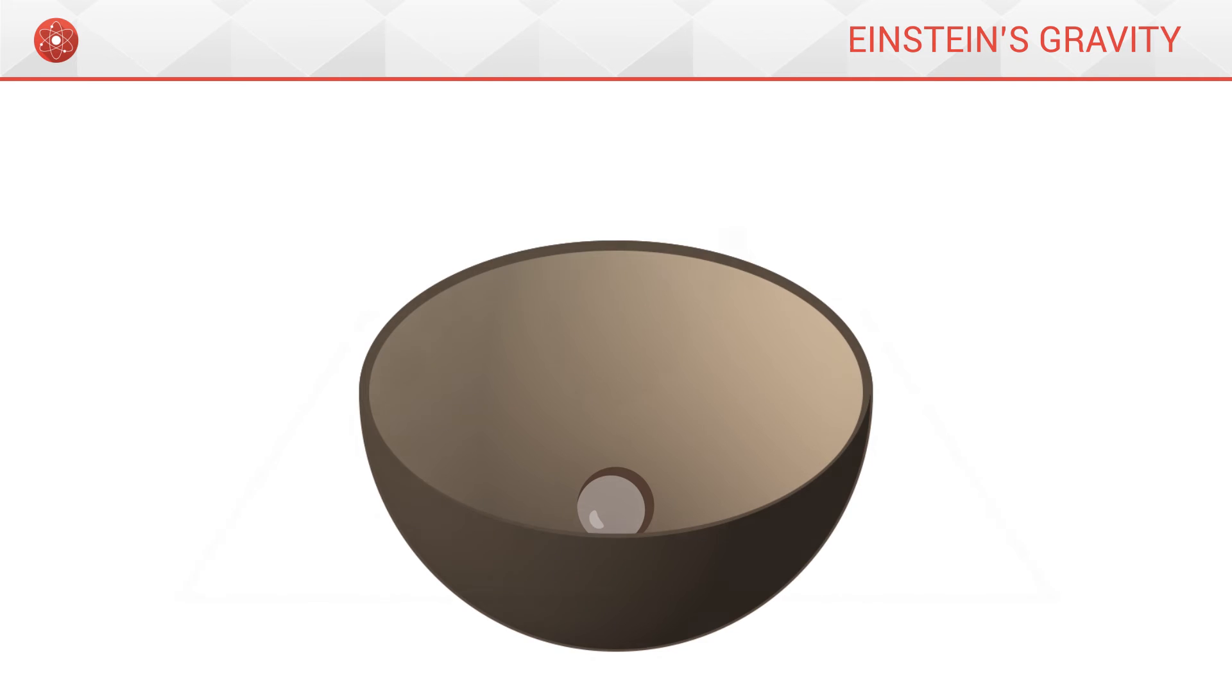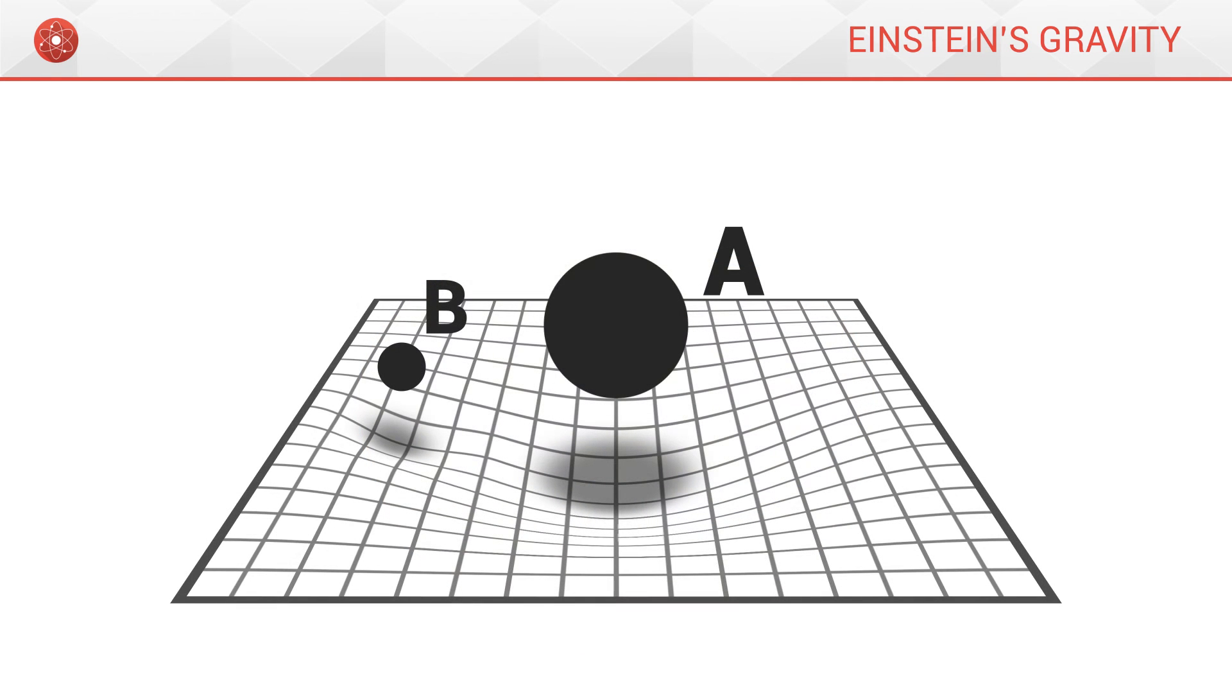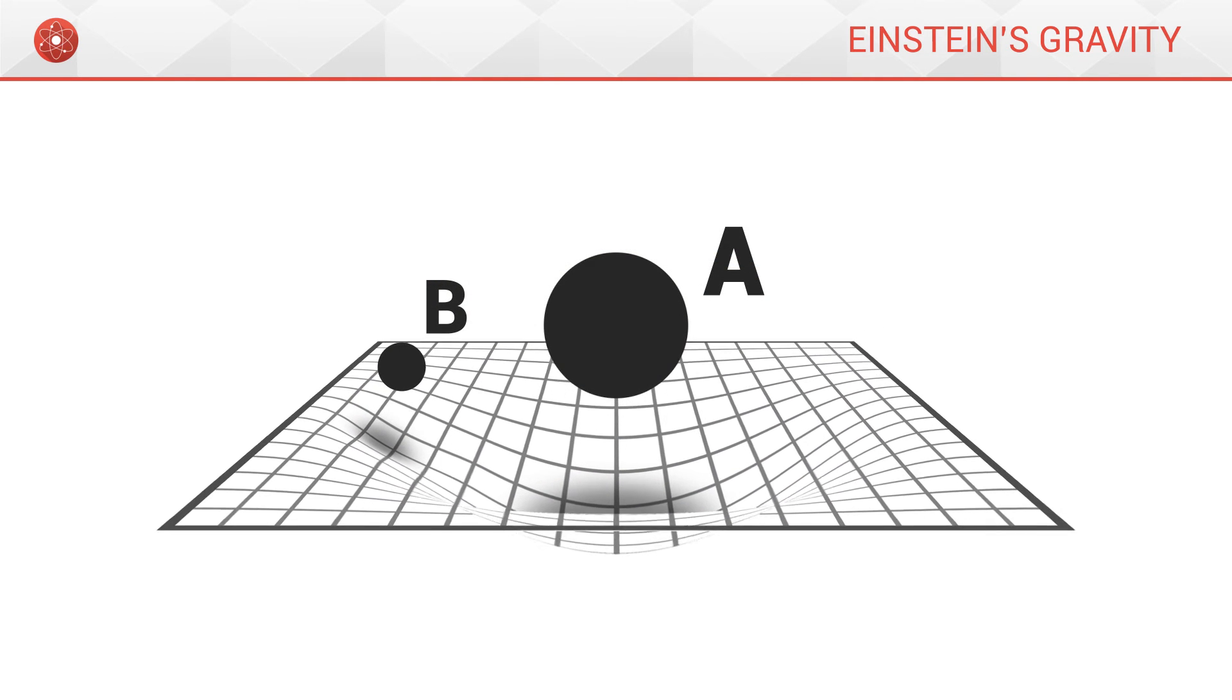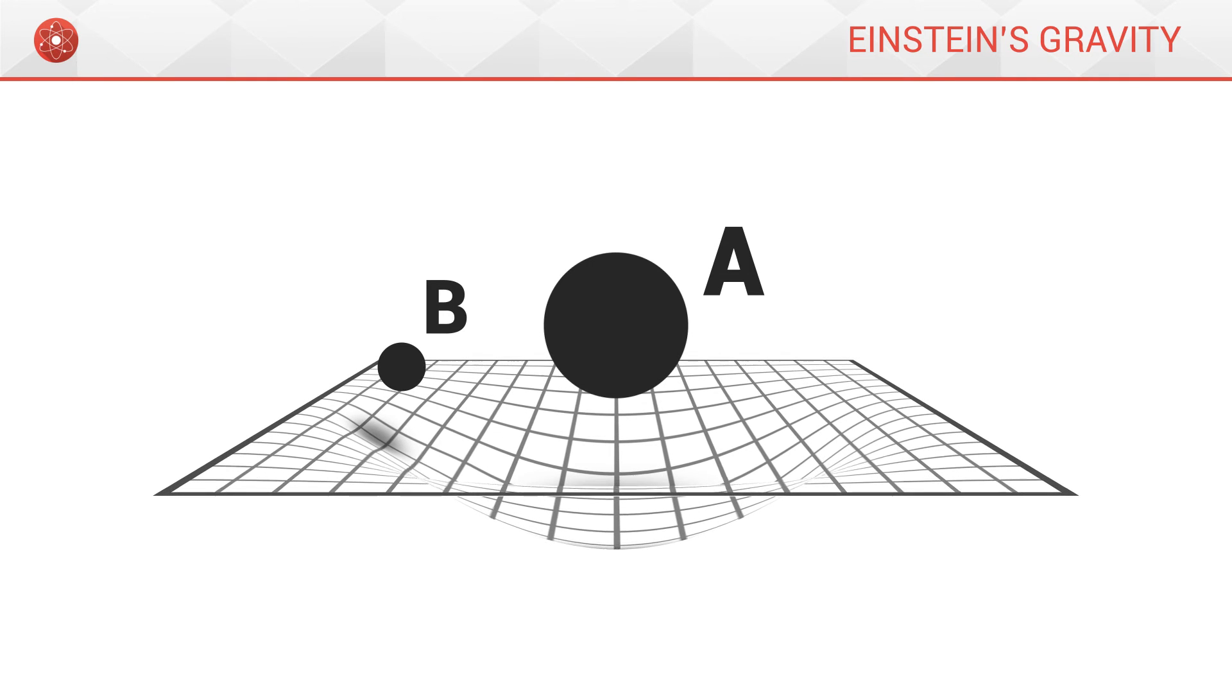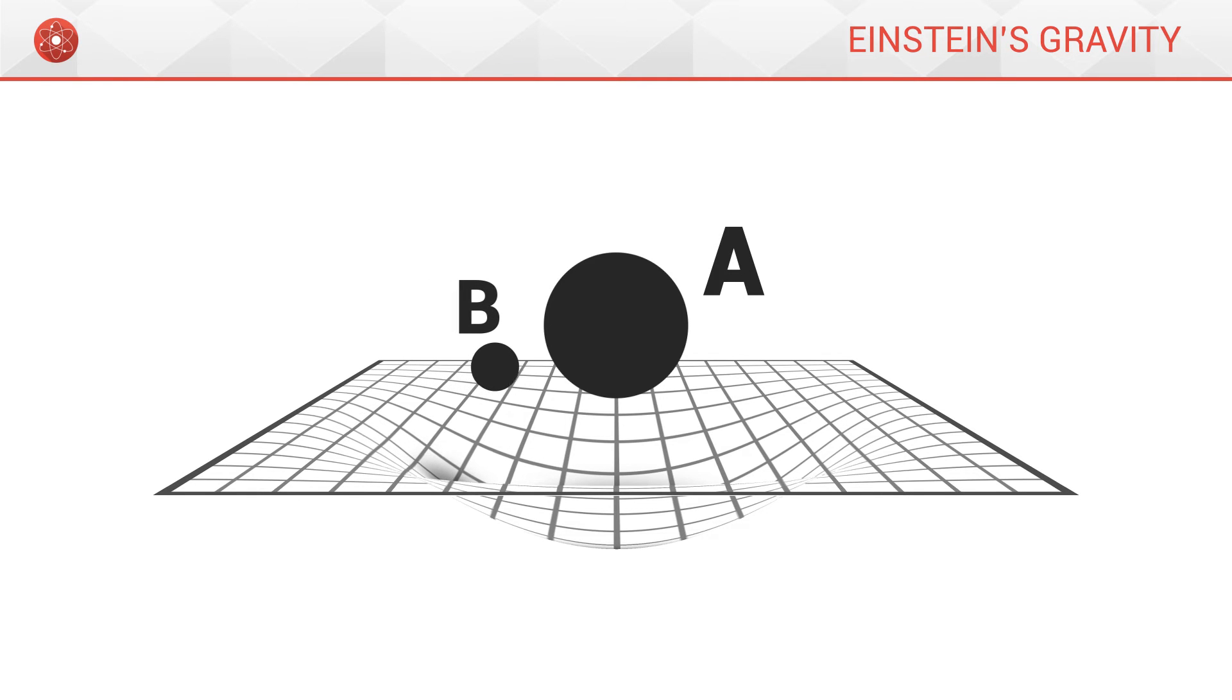In a similar way, when we think about space-time, in distorting the grid, A creates a sort of bowl around itself. Consequently, just like a marble, B will slide along this bowl, gradually edging closer to A.